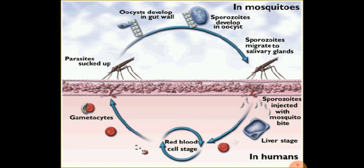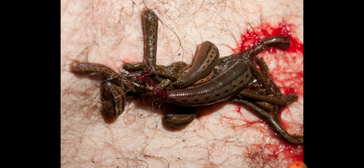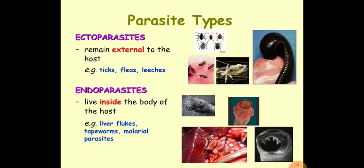If a parasite lives inside the body, it is called an endoparasite. Leech sucks the blood of humans or cattle from outside the body — such parasites are known as ectoparasites. So parasites are categorized into ectoparasites and endoparasites. Ectoparasites remain external to the host, and endoparasites live inside the body of the host.